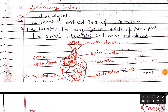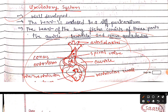The circulatory system is well developed. The heart is enclosed in a pericardium. The heart of the lung fish consists of three parts: auricle, ventricle, and conus arteriosus. These three parts can be seen in the image. If you search for Dipnoi, you can find a more detailed diagram.